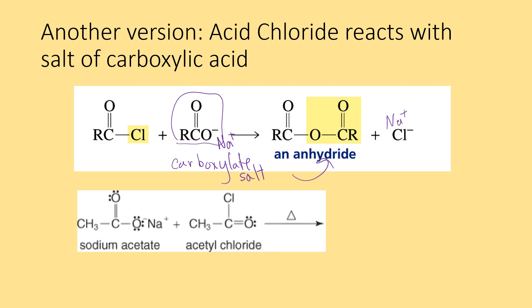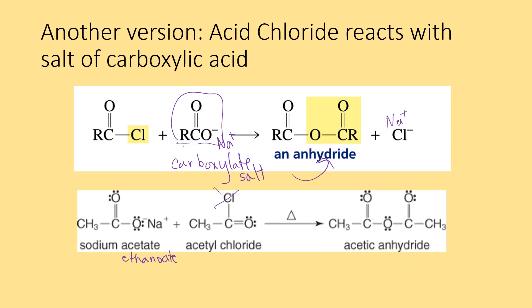Here's an example: sodium acetate — the carboxylate salt — plus acetyl chloride, which has the C double bond O and the Cl. The chlorine goes away and the acetate ion is on the other side to make acetic anhydride again. Plus this time we get NaCl. The NaCl comes from the sodium of the salt and the chlorine of the acid chloride.